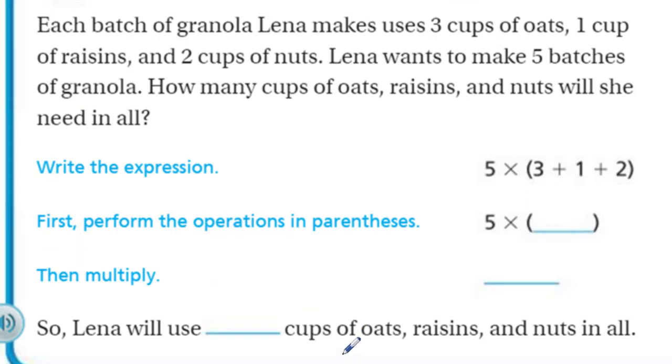Now, example. Each batch of granola Lena makes uses three cups of oats, one cup of raisins, and two cups of nuts. Lena wants to make five batches of granola. How many cups of oats, raisins, and nuts will she need in all? What a great question. Write the expression. We have five times the sum of three, one, and two. We have the five because we need to make five batches. Then we have, first, perform the operations in the parentheses. Three plus one plus two is six. So now we have five times six. We just multiply. Thirty. I know my times table.